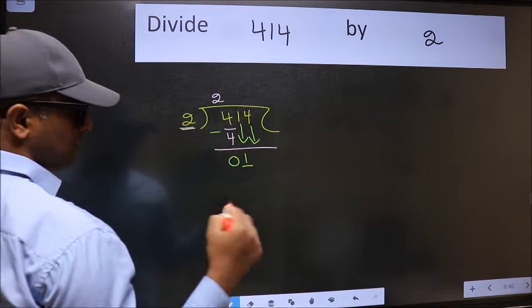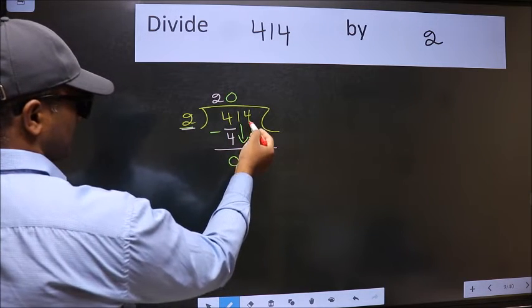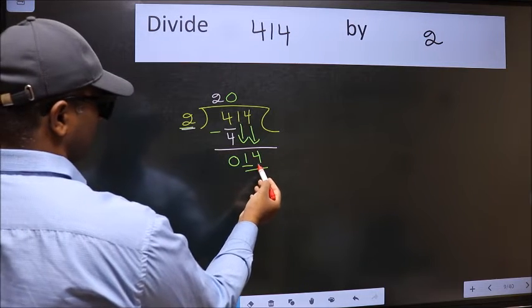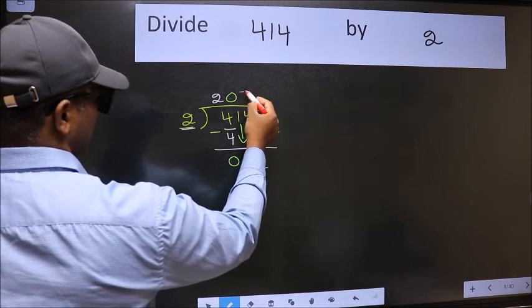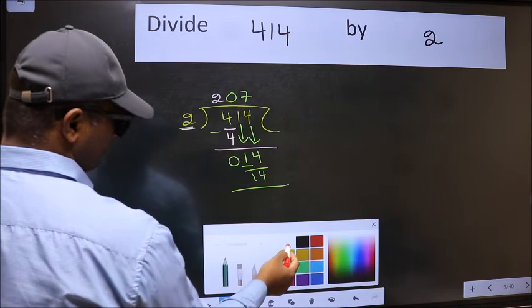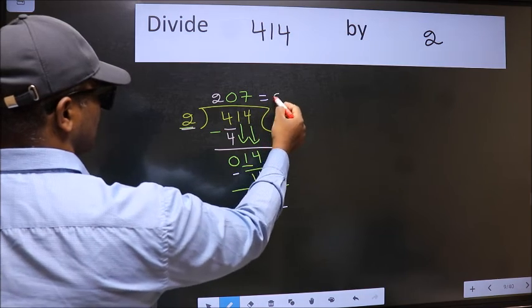And the rule to bring down the second number is we should put 0 here. Then only we can bring down this number. Now 14. When do we get 14 in the 2 table? 2 times 7 is 14. Now we should subtract. We get 0. So this is our quotient.